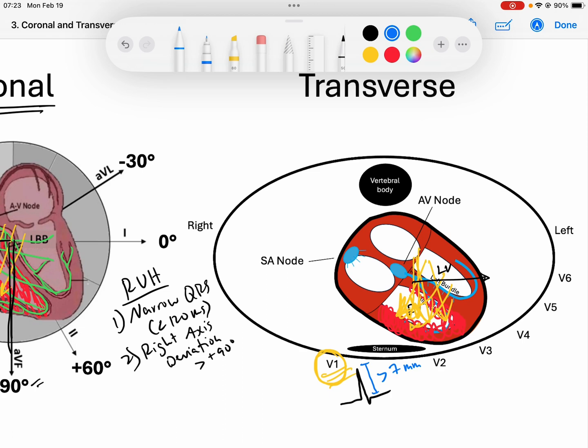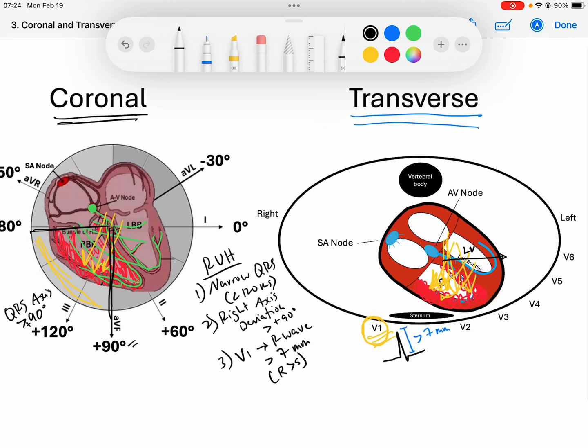That is my criteria from my precordial leads for right ventricular hypertrophy. V1, the R wave will be greater than 7 millimeters. There are some other criteria that people use. You could also have in V1 the ratio where the R wave is greater than the S wave, meaning the positive forces are greater than the negative forces. Sometimes people will say there will be a dominant S wave in V5 or V6. However, I'm not really a huge fan of that one.